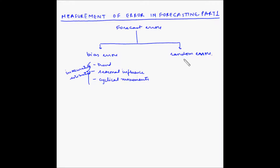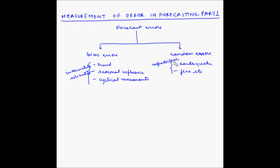Now let us look at random errors. This type of forecast error is caused by unpredictable factors because of which the forecast deviates from the actual demand. Some reasons for random error could be earthquake, fire, etc. These are all unpredictable factors.